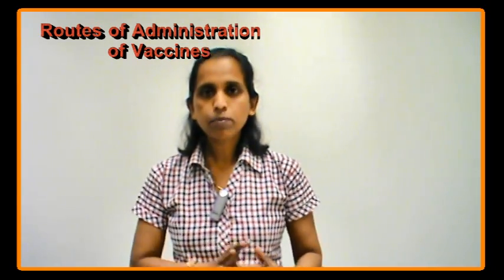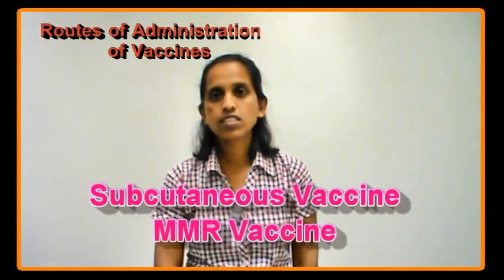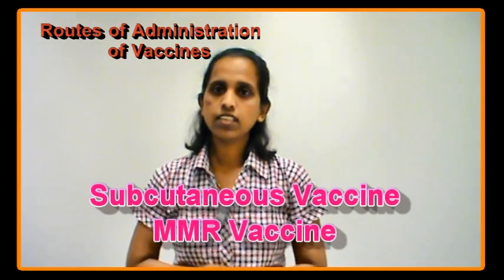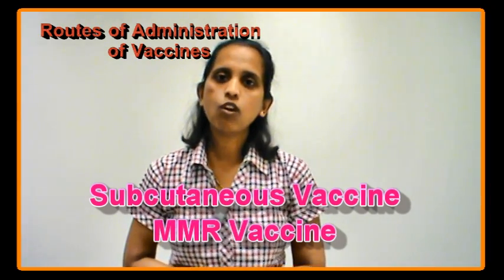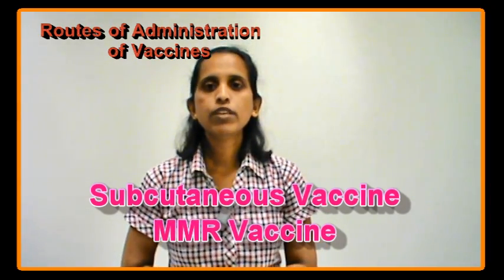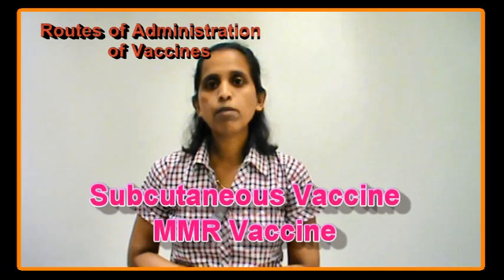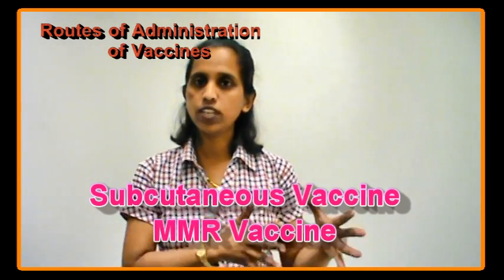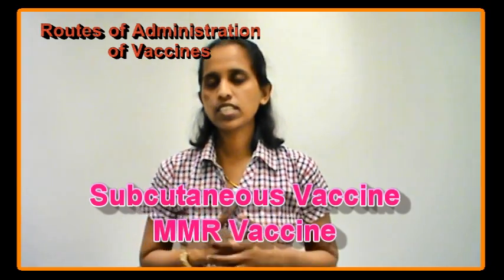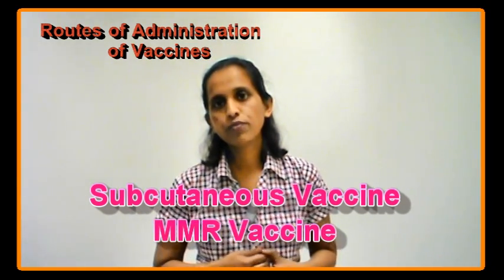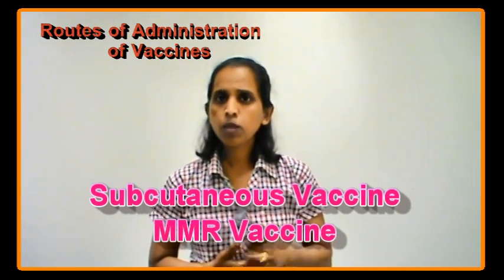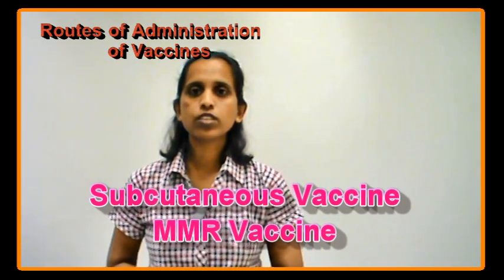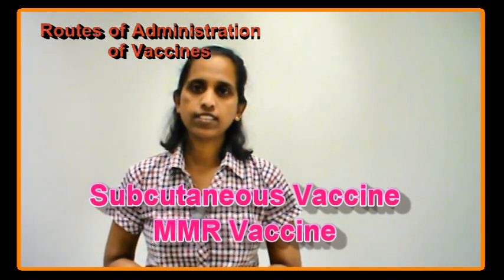The next subtype of injectable vaccine is subcutaneous — under the skin. The most common examples of subcutaneous vaccines are the measles, mumps, and rubella vaccine, or in countries where measles is given as an isolated vaccine, the measles vaccine. Another vaccine administered by the subcutaneous route is the yellow fever vaccine.